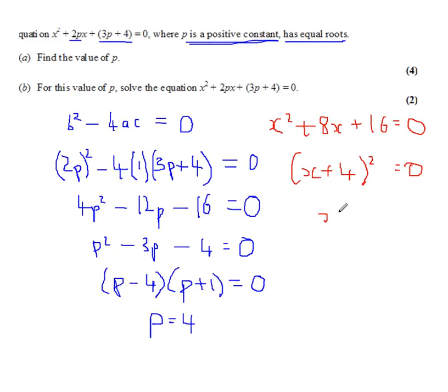And that is x equals minus 4. Now, we expect only one solution because the question does say quite clearly on the first line. I've underlined it, it has equal roots. So if we get more than one solution, something's gone wrong. But x equals minus 4, that whole question's worth 6 marks.